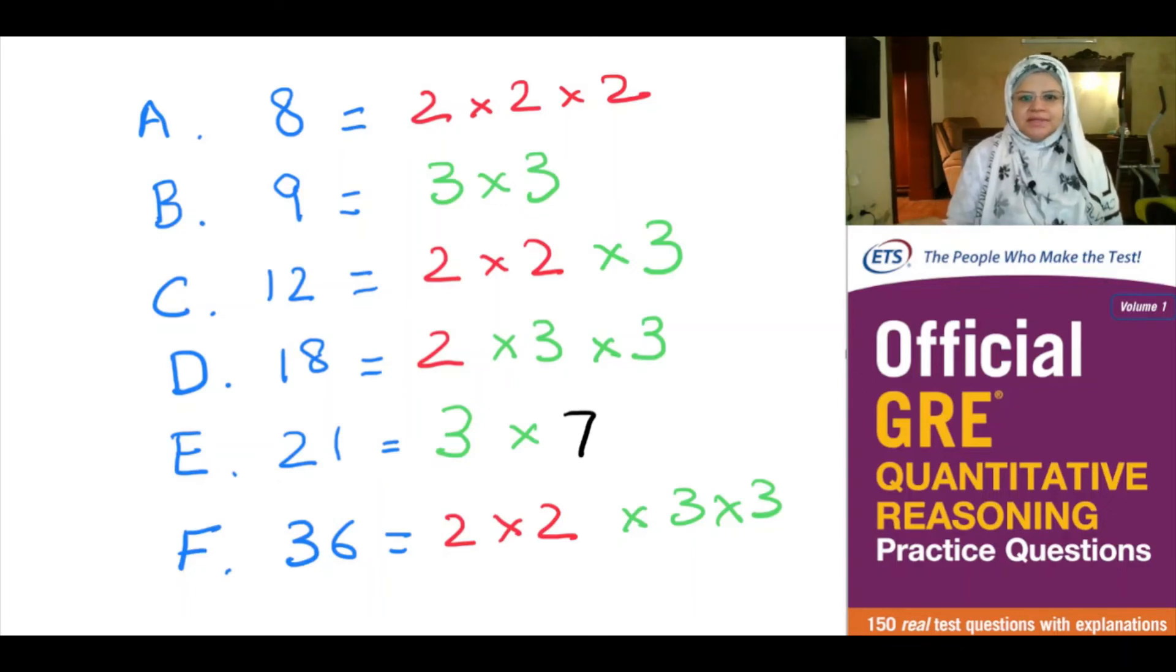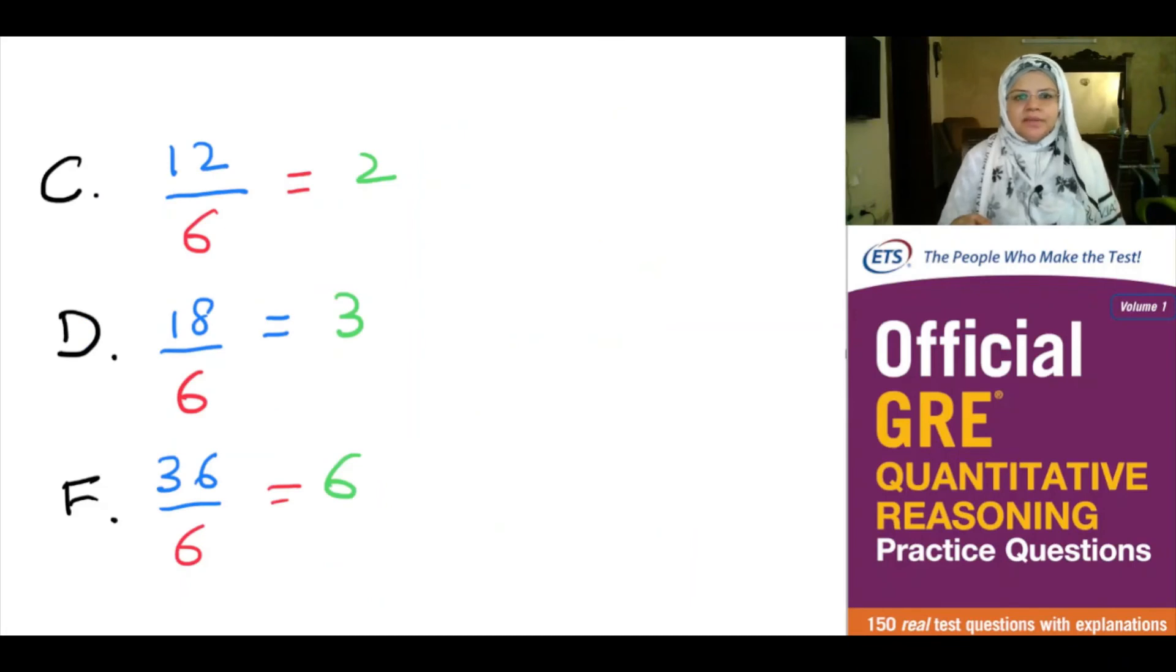We can see that option C is a multiple of 2 and 3, option D is a multiple of 2 and 3, and option F is a multiple of 2 and 3. We want a number which is divisible by 6. Option C: 12 divided by 6 equals 2. Option D: 18 divided by 6 equals 3. Option F: 36 divided by 6 equals 6. Therefore, our answer choices include C, D, and F.